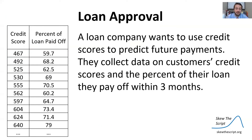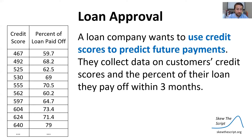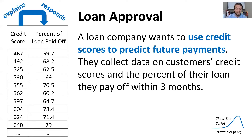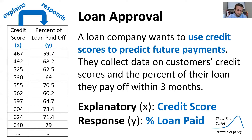This all feeds into something called a loan approval. Loan companies want to use credit scores to predict future payments. They'll collect data on customers' credit scores and the percent of their loan they pay off within three months. We have a random data set with the credit score of the individual and the percent of loan paid off. This is really important because loan companies want to use these scores to predict future payments. In this case, the credit score is the explanatory variable and the percent paid off is the response variable.